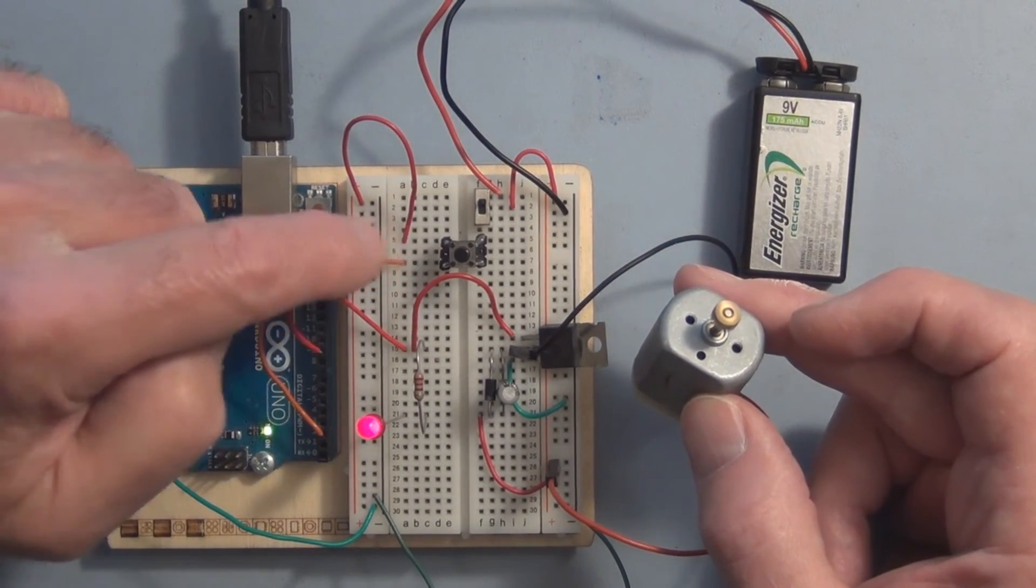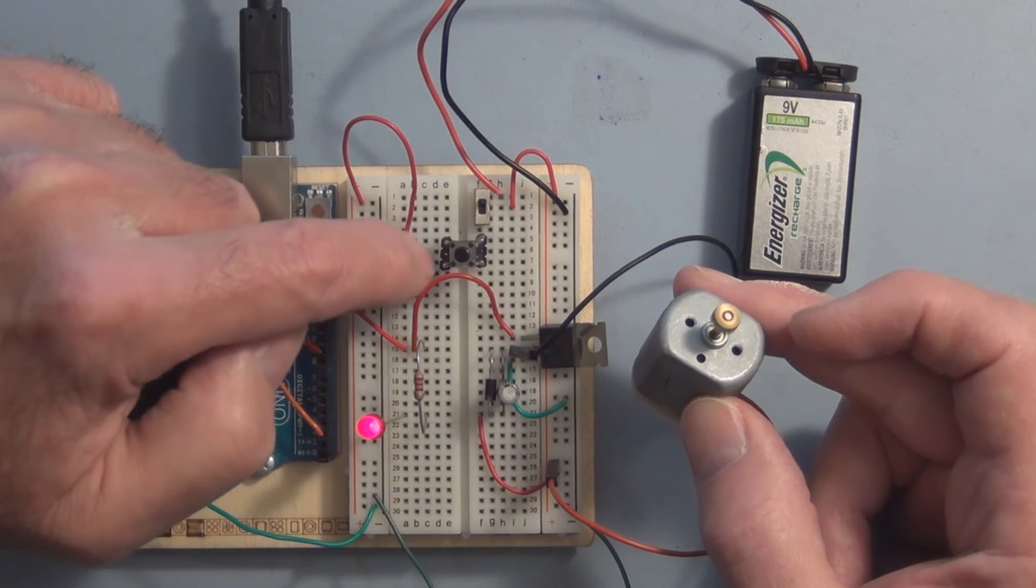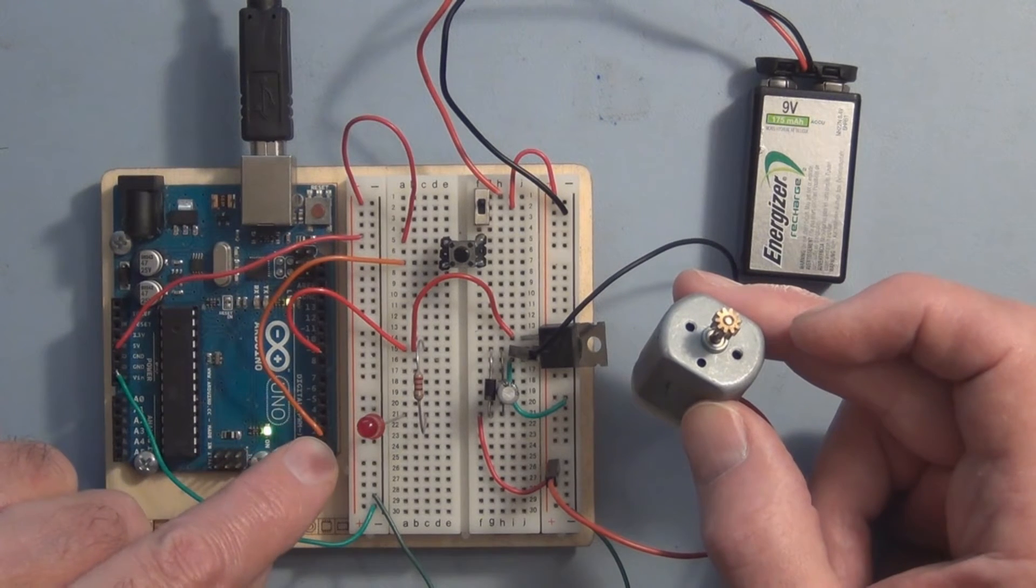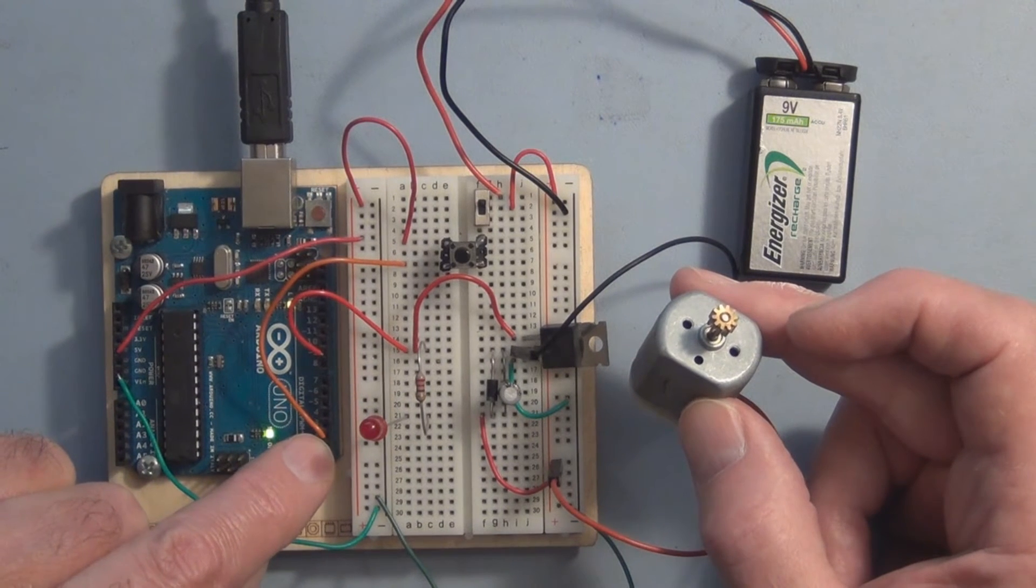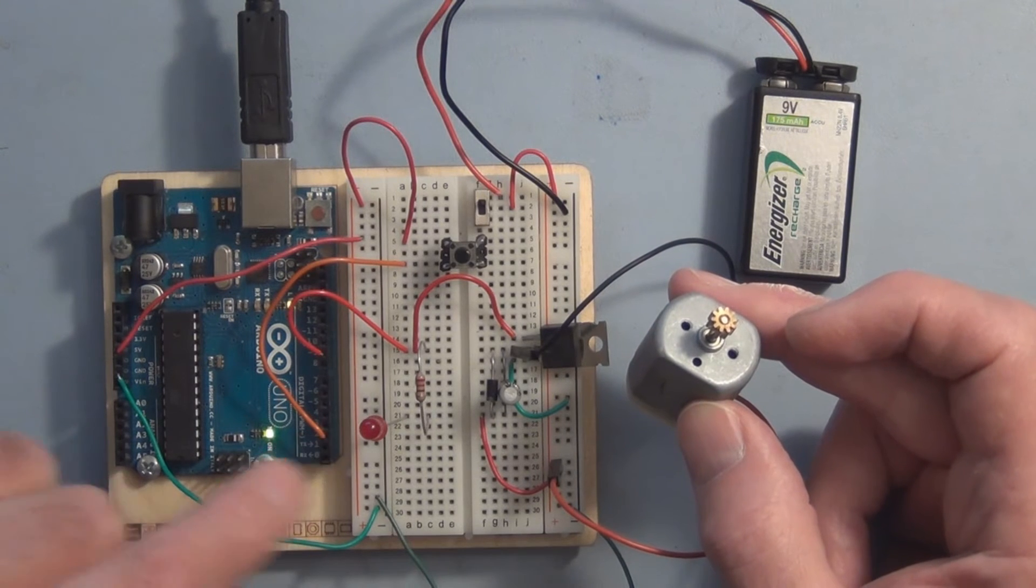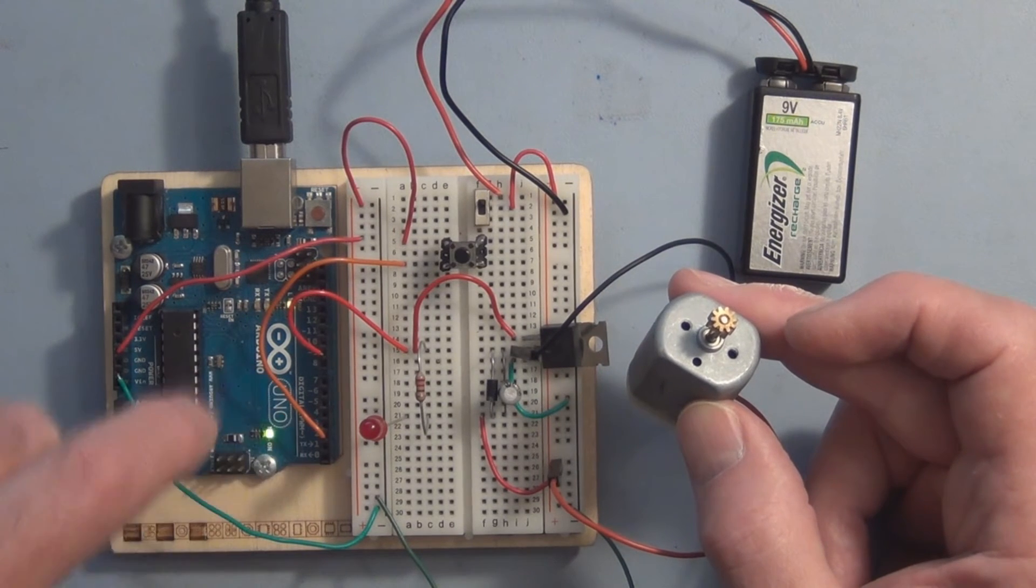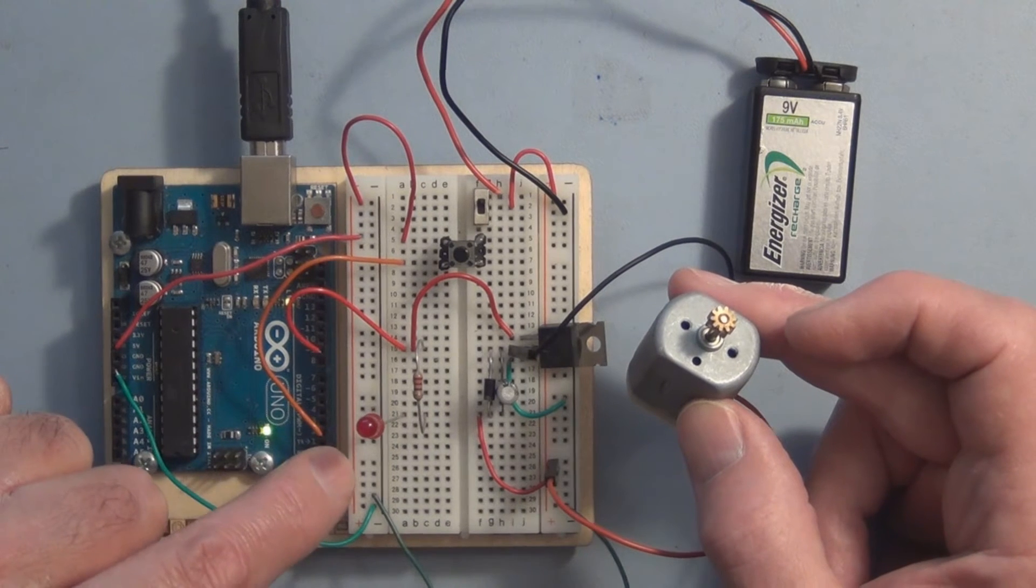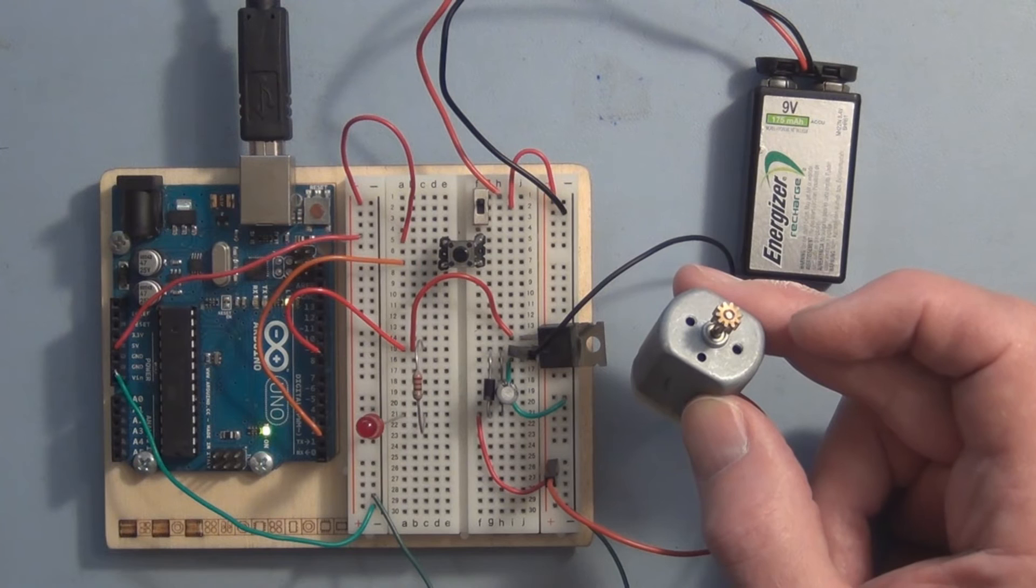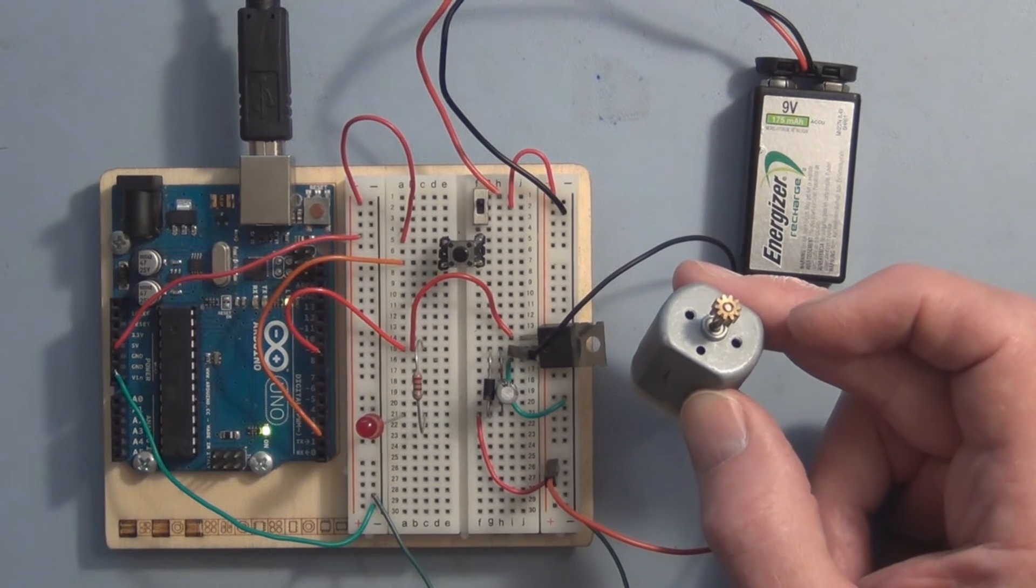But it's supposed to immediately when the button is released there shouldn't be five volts on this side, and there isn't. What's happening is this pin here is just floating in air and whatever the circuitry is inside, it needs a way to go to ground, it needs a path to ground.